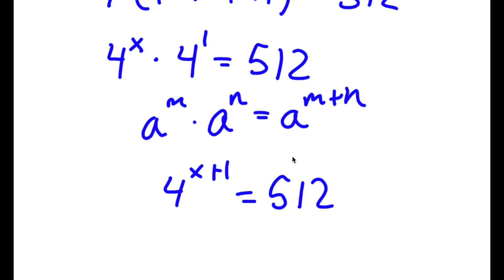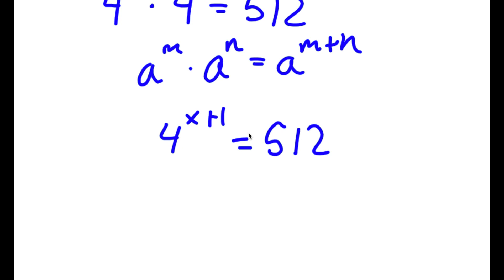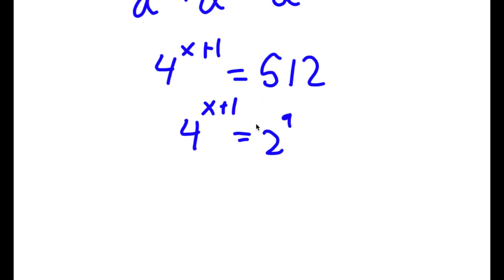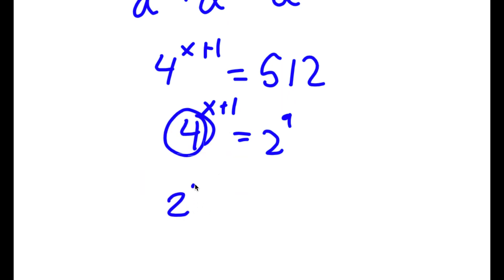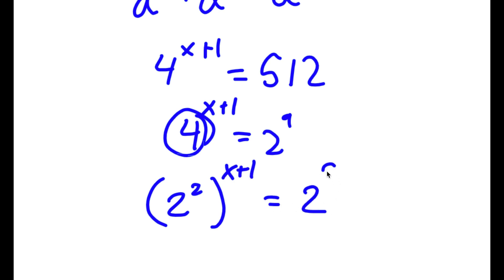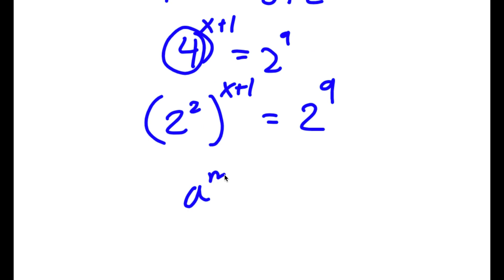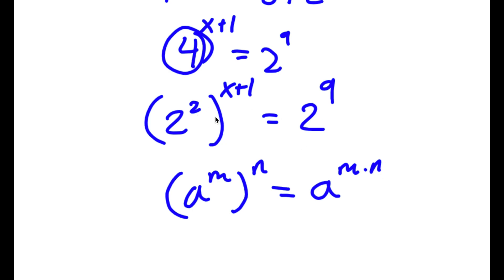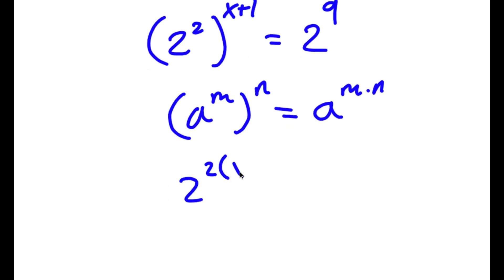Now I'm going to rewrite 512 as 2 to the power of 9. So I have 4 to the power of x plus 1 is equal to 2 to the power of 9. And 4 I can rewrite as 2 squared. So now I have 2 squared to the power of x plus 1. Using the rule a to the power of m to the power of n equals a to the power of m times n, this becomes 2 to the power of 2 times x plus 1, which equals 2 to the power of 9.